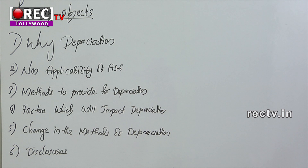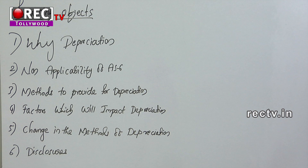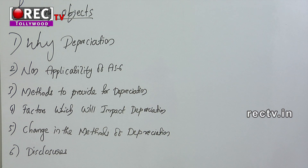Non-applicability of AS 6: there are four categories to which AS 6 does not apply. First, wasting assets — for example coal mines, oil wells, etc. Second, regeneration resources — for example forests, livestock, etc. Third, goodwill arising on business acquisition, which has a separate standard — AS 40. And fourth, land, as it is a non-depreciable asset.